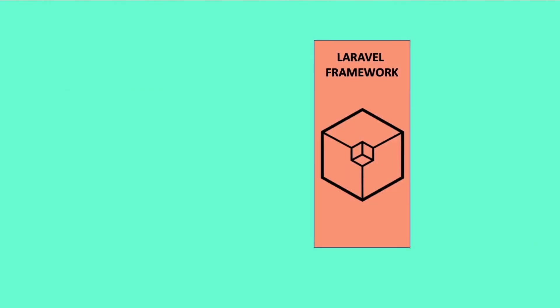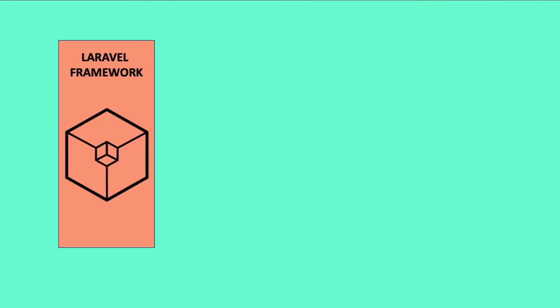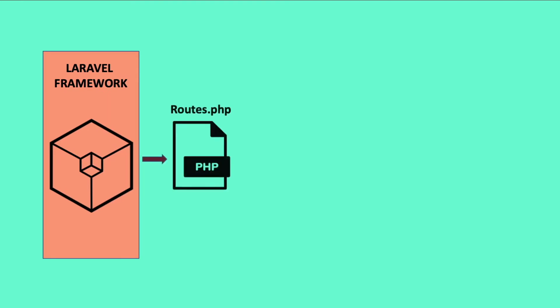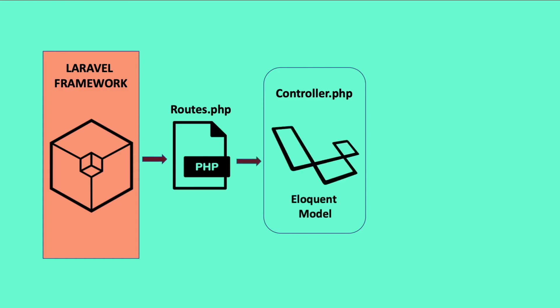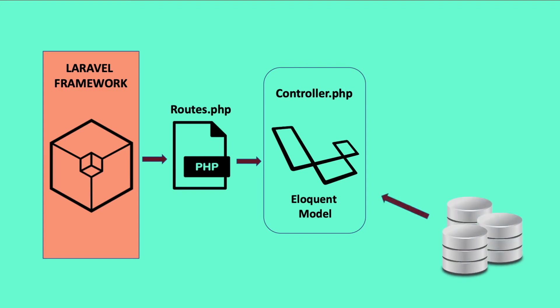Once Laravel recognizes the request for the homepage, it will register it in the routing file to process the request and then it will load a controller. Since the donut shop's homepage can contain many different types of data — for example, today's specials or the different types of donuts offered — Laravel uses an eloquent model to call upon an API to help query through the database efficiently and get the information for the donut shop's homepage.